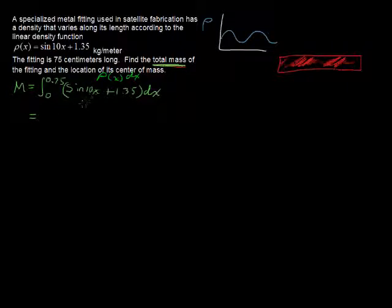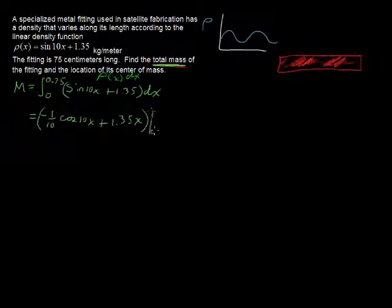So back to solving this. The antiderivative of sine of 10x is negative 1 tenth cosine of 10x, and the antiderivative of 1.35 is 1.35x. So now we have this to evaluate from 0 to 0.75. Hey, why am I doing 0.75 when it told us 75? It's because the density is in meters, and 75 centimeters equals 0.75 meters.